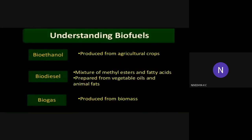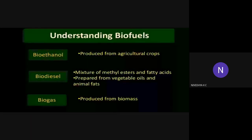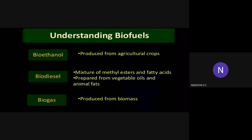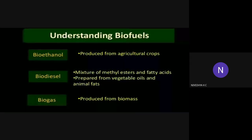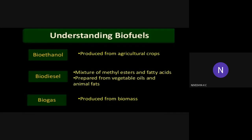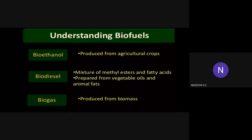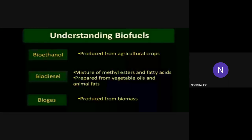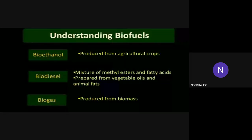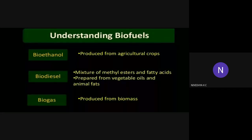Bioethanol is produced from agricultural crops. Biodiesel is a mixture of methyl esters of fatty acids — it is prepared from vegetable oils and animal fats. Biodiesel is extracted from vegetable oils and animal fats. Third, biogas — it is produced from biomass.